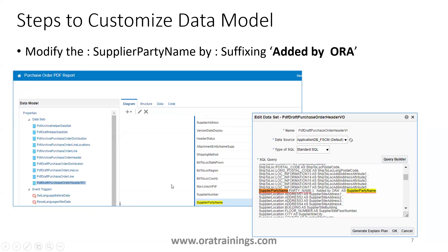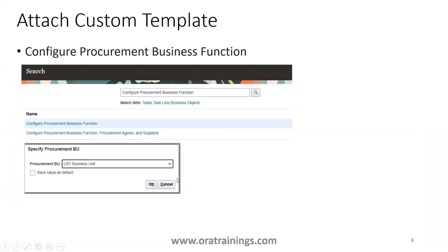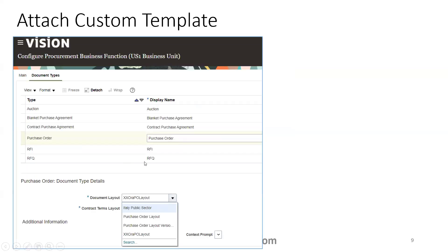You can then modify whatever content you want in the custom data model. In our example, we added a simple concatenation — 'added by Aura' — to the supplier party name. Once this is done, you can also modify the template if needed. In this particular session, we modified only the data model and not the template.